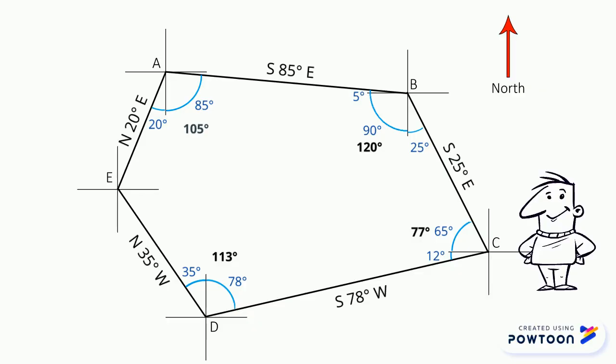For the given bearing of point E towards point A is north 20 degrees east. So to find this part, we must subtract 90 from 20, that gives us 70 degrees.